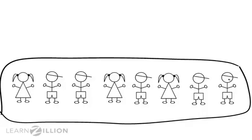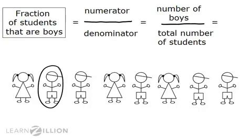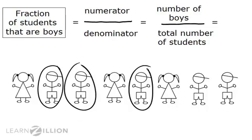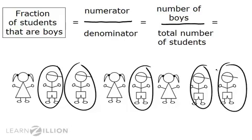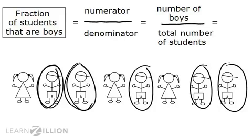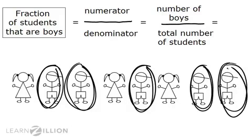The part that the question asks me to think about is the fraction of students that are boys. There are one, two, three, four, five boys. It doesn't matter where they are in line. Since I could think about each boy as one-eighth of the whole number of students, I could count like this: one-eighth, two-eighths, three-eighths, four-eighths, and five-eighths.